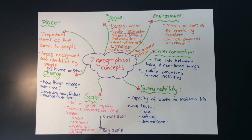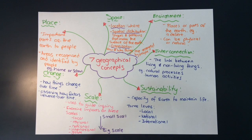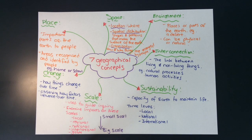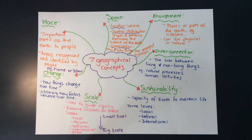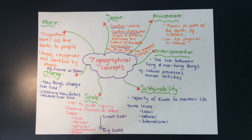Sustainability refers to the capacity of earth to maintain life. Geographers like to look at this on three levels: local, national, and international. They are all interrelated, so whatever happens at a local level impacts what happens at a national and international level. This is a really important concept in current world history, because there are lots of ways we're impacting or using the earth which is having consequences on these different levels.